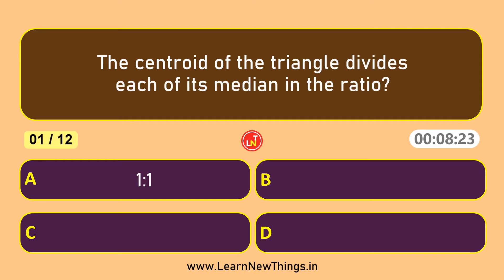The centroid of the triangle divides each of its medians in the ratio 2 is to 1.